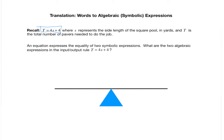An equation in general expresses the equality of two expressions. So what are the two algebraic expressions in this equation? Well one of them is just t and the other one is 4s plus 4.